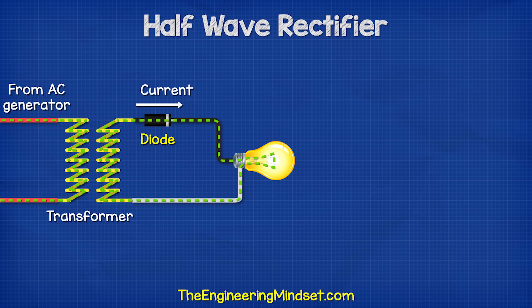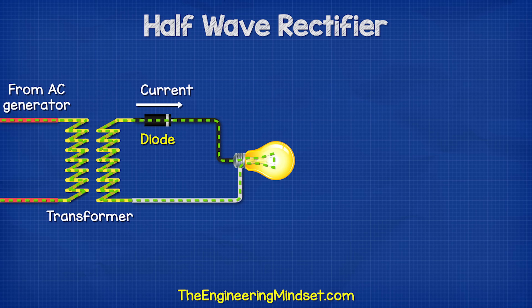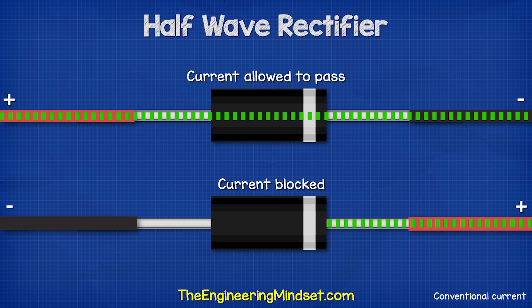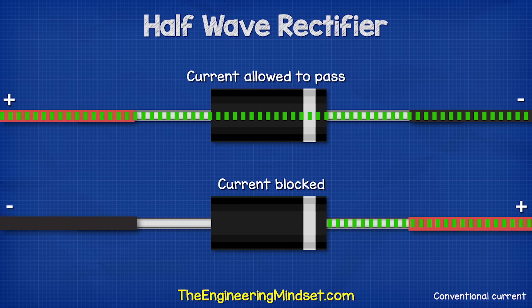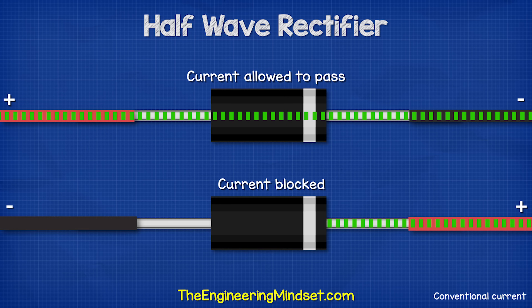The rectifier consists of diodes. A diode is a semiconductor device which allows current to flow through it, but in only one direction.